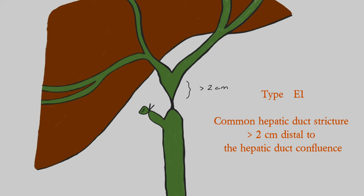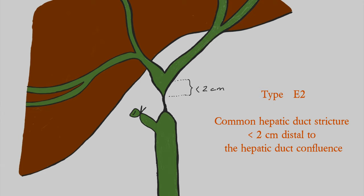E1 is when there is a common hepatic duct or bile duct stricture which is more than 2 cm distal to the confluence of the right hepatic duct and the left hepatic duct. When this stricture is a bit closer to the confluence — that is, less than 2 cm distal to the confluence — it is Type E2.